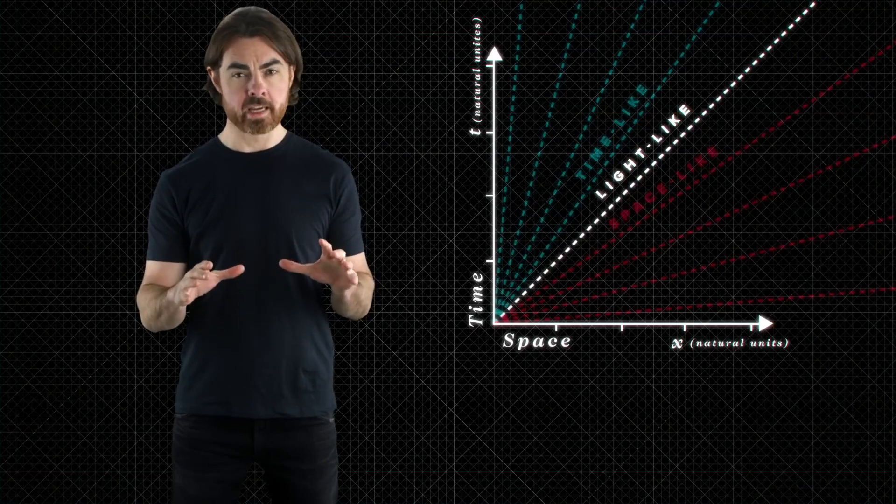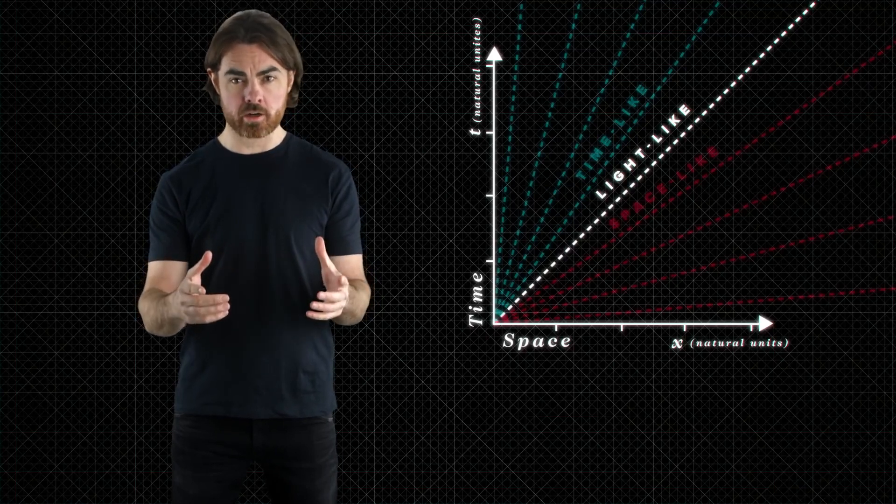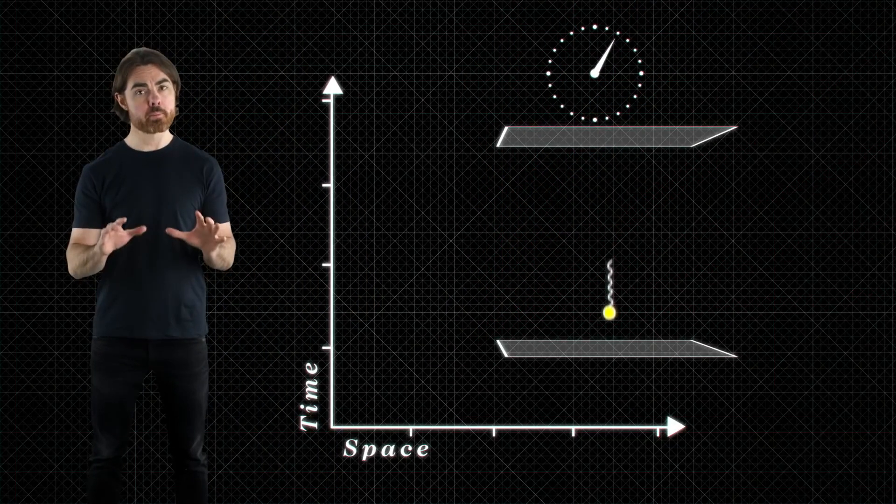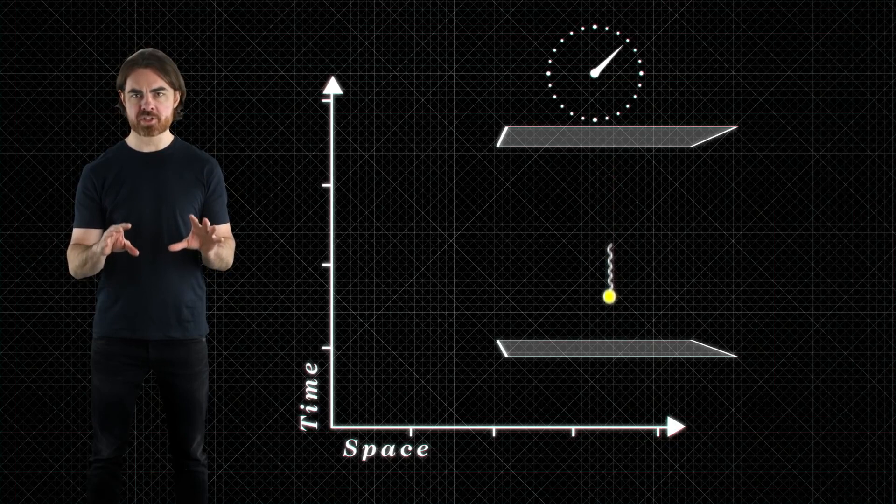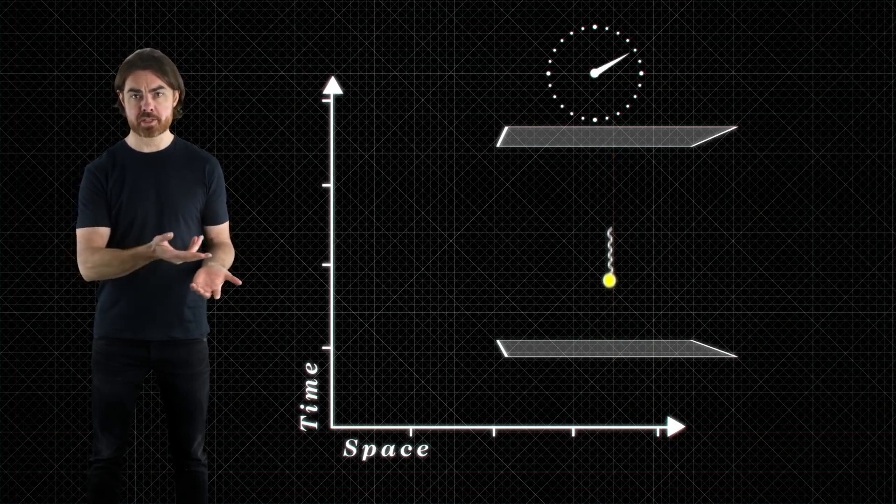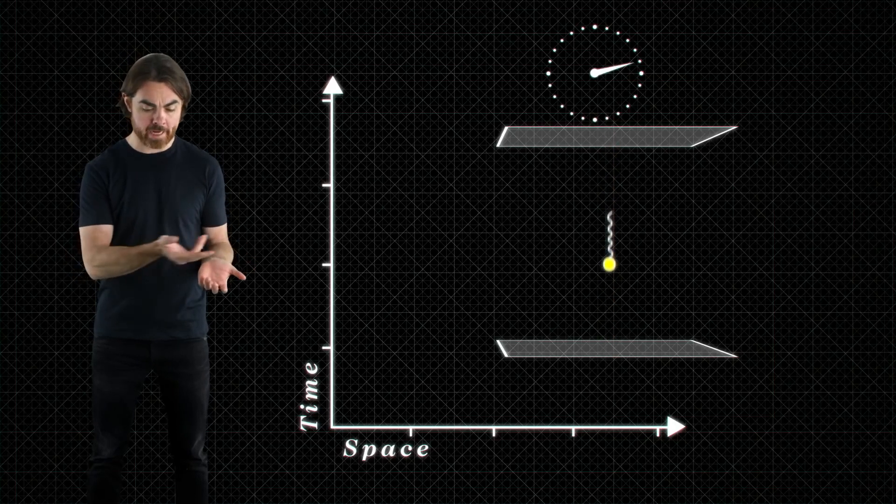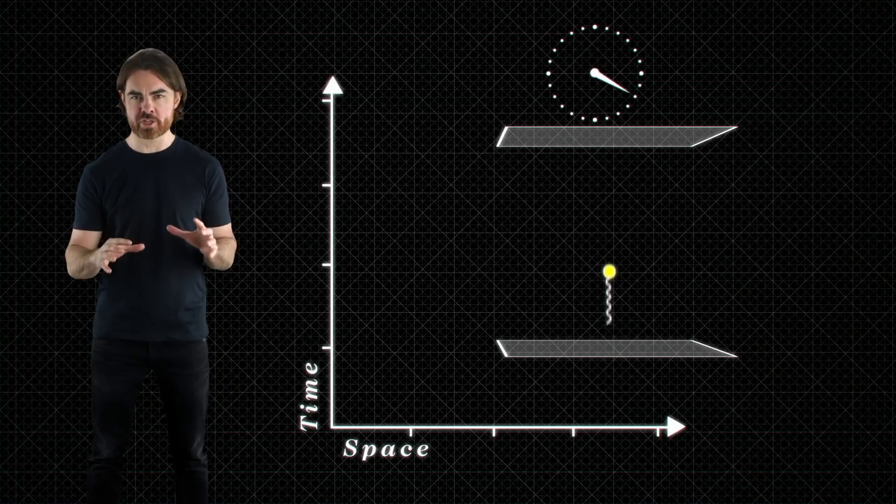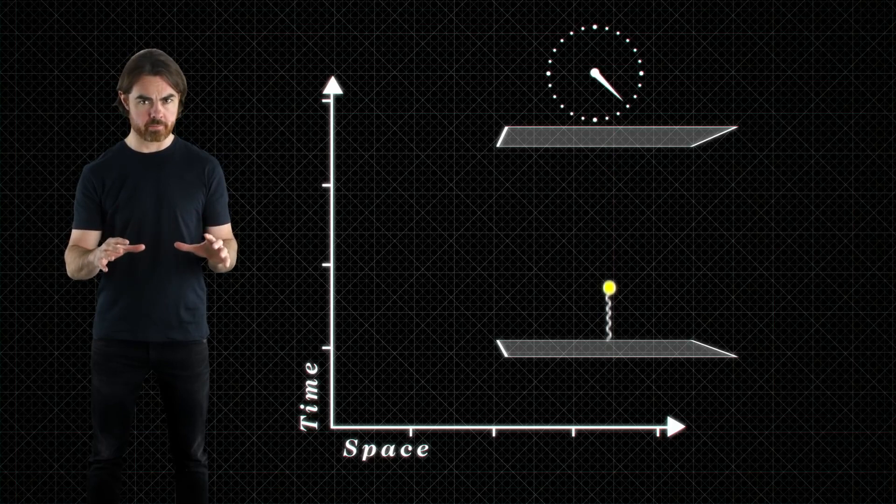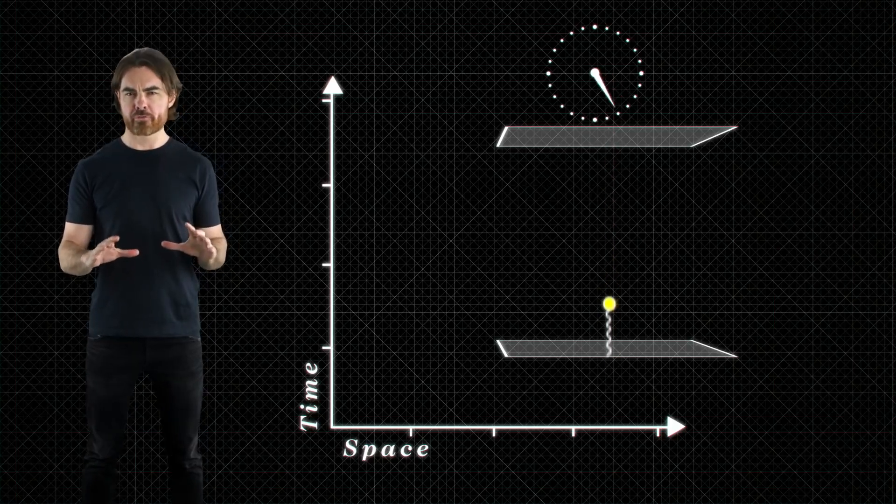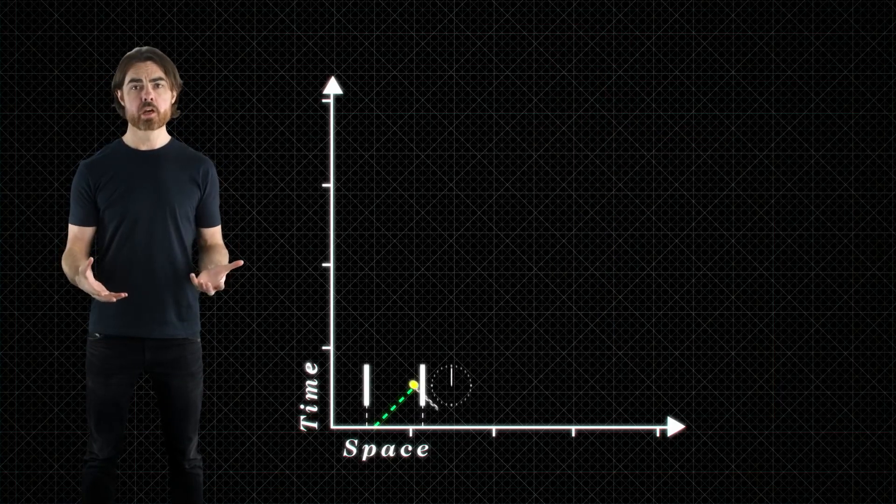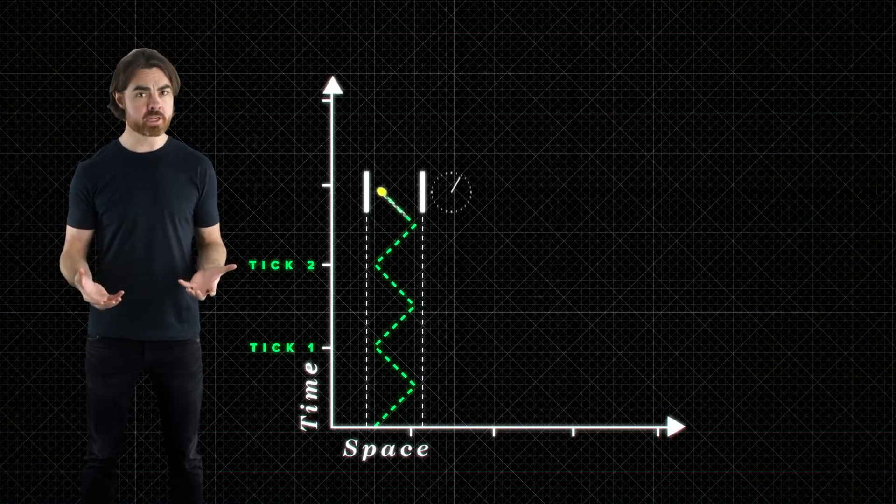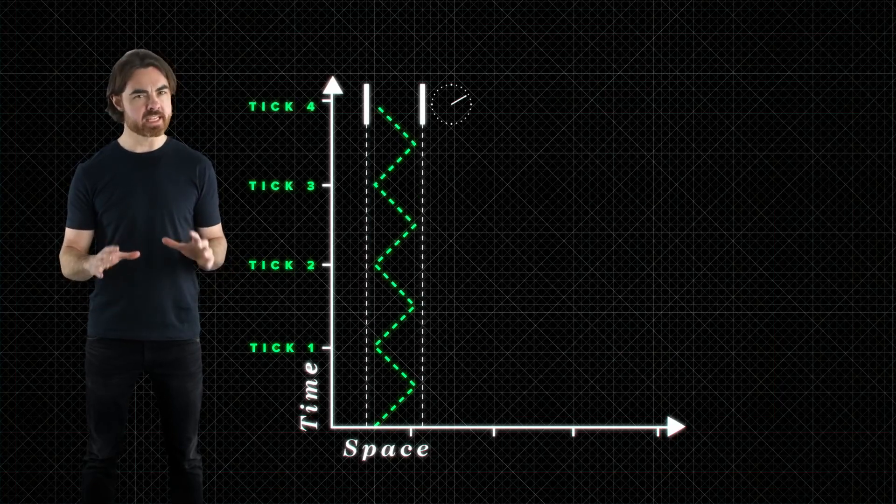But what does this look like if we replace our regular clock with a photon clock? Now, remember, a photon clock marks time with a particle of light bouncing between two mirrors. Each back and forth bounce is one tick of the clock. Now, we'll get back to why this is a good measure of the flow of time in a minute. Stationary, the world line of the photon clock looks like this. The clock travels smoothly straight upward in time, but is unmoving in space.